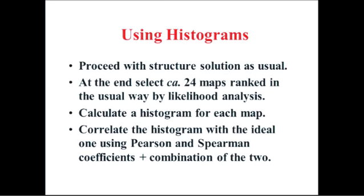So what you can do in maximum entropy — indeed any method — is do a structure solution, look at about 24 maps per likelihood, and calculate a histogram for each one. That's a very quick and easy thing to do. You correlate the histogram that you've measured with the histograms calculated for ideal data, and you choose the ones with high correlation coefficients.